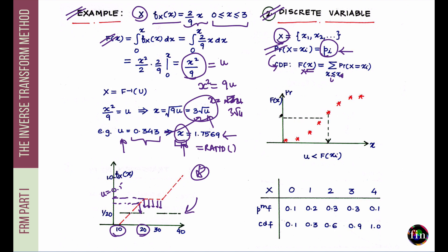The problem with a discrete CDF is that you can easily pick a u that doesn't directly hit any point on the CDF plot. The rule we follow is: pick the point just to the right of where the hypothetical horizontal line falls — that is, choose the x_i that is the minimum realization of X at which the CDF first becomes greater than the simulated value of u. Mathematically: x = min{x_i : F_X(x_i) ≥ u}.